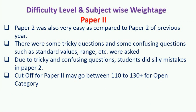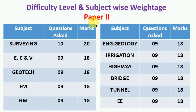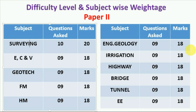Now the subject-wise weightage of Paper 2: except Surveying, all other subjects were asked for 18 marks with 9 questions each. Only Surveying had 10 questions carrying 20 marks.